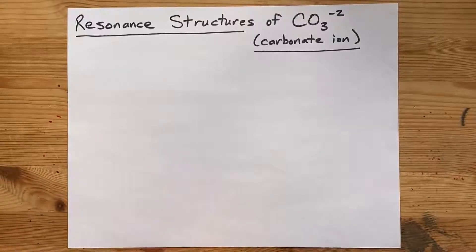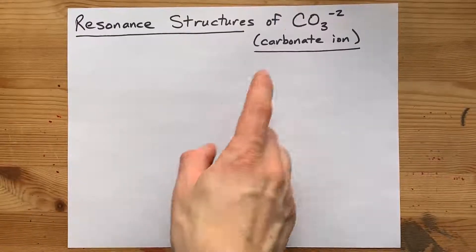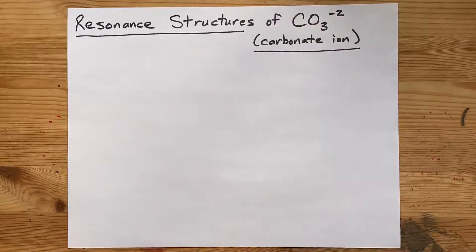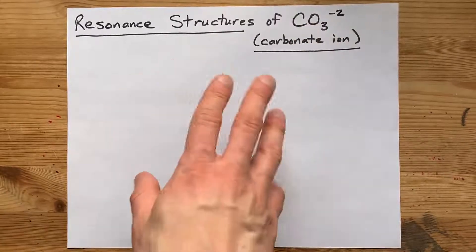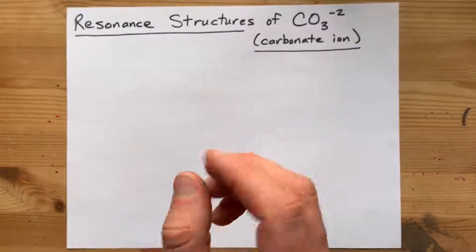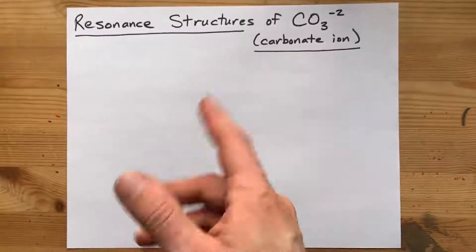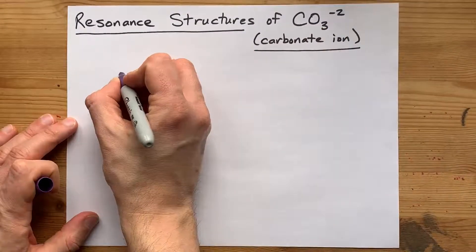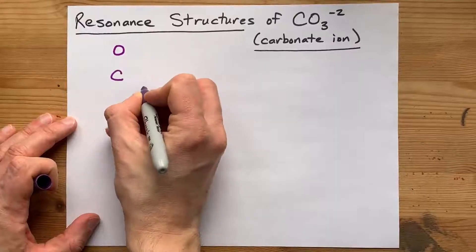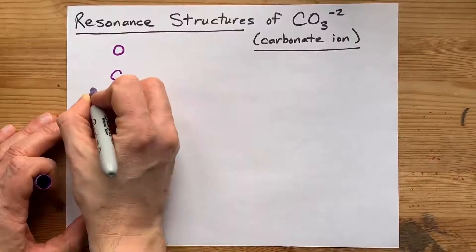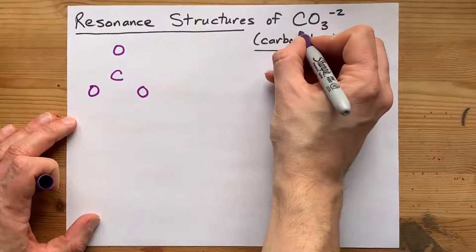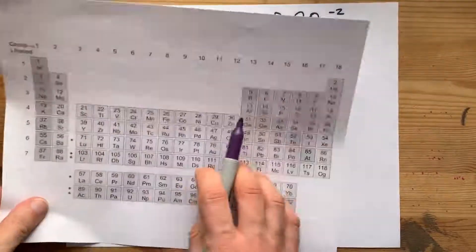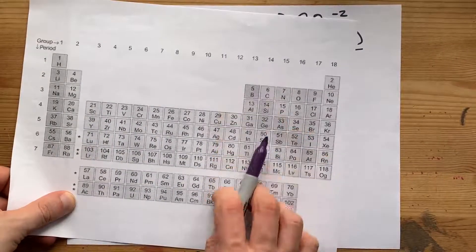We're going to draw the resonance structures of the carbonate ion CO₃ with a minus 2 charge. Before we do that, we're going to try to draw the Lewis structure. This is a carbon atom surrounded by three oxygens. Carbon brings four valence electrons — I know that because it's in group 14.